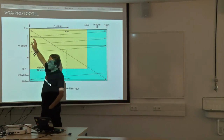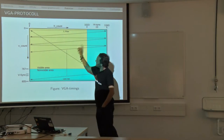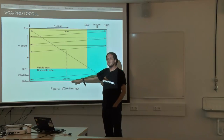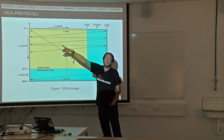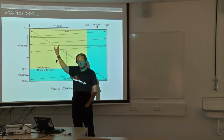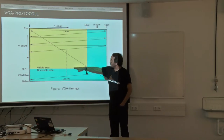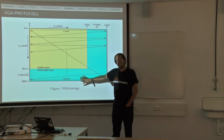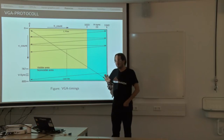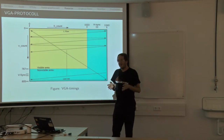VGA starts with the first pixel in the upper left, then goes line by line until it reaches the end, then starts again from the upper left. The visible area is what you see on the monitor, but there is also a small overhead region beyond the lines and below the picture which is not visible. This non-visible area can be used for tasks that need to be done outside the visible picture — we'll get to that soon.